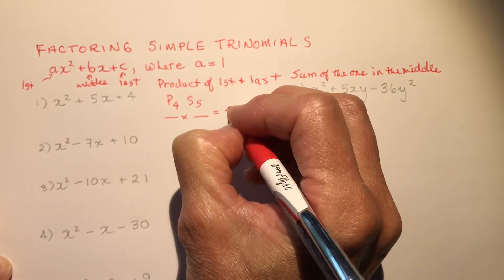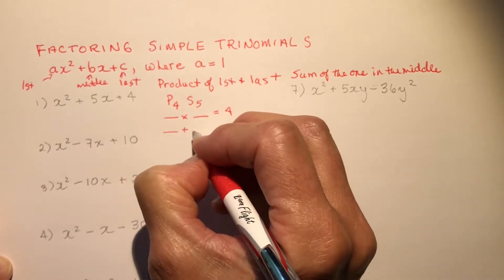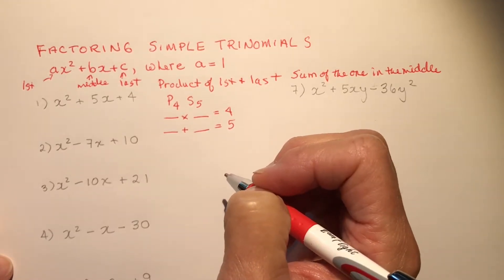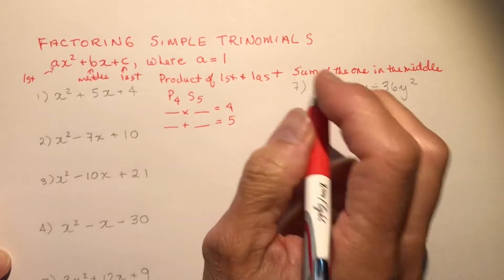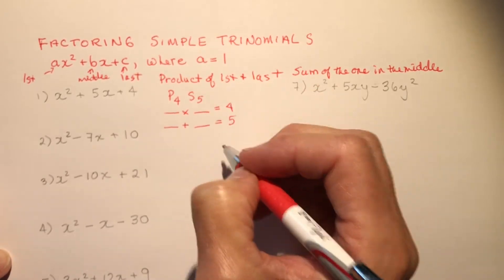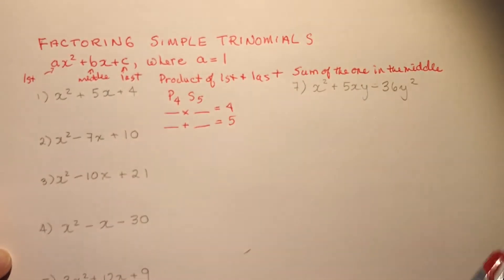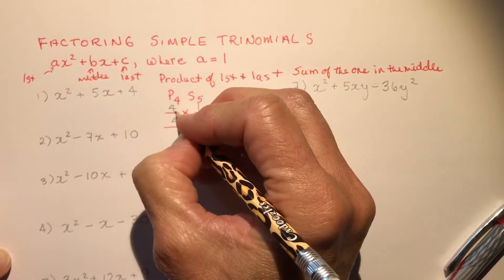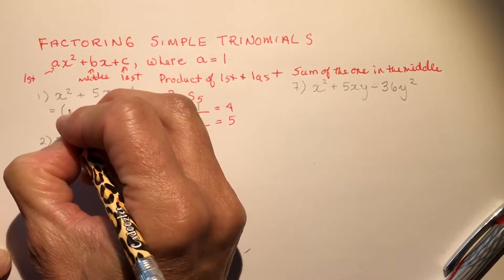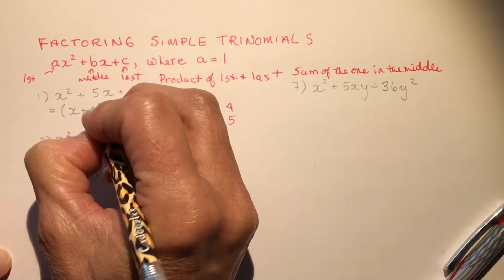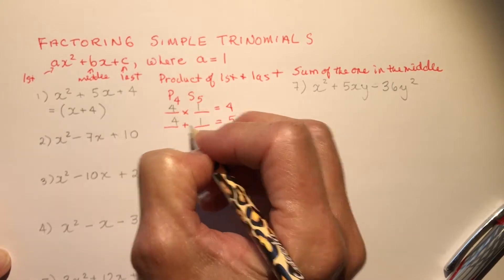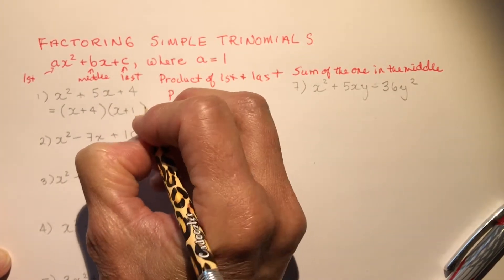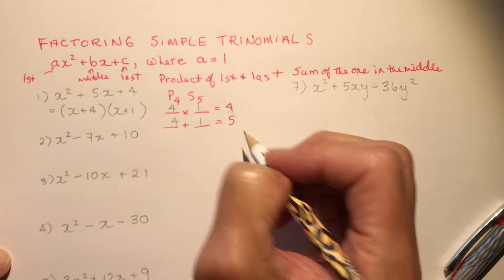So for this first example, I'm looking for two numbers that multiply to 4 and add to 5. You need to know your times tables — if you don't know them by grade 11 it will cost you a lot of time. So: multiplies to 4, adds to 5. That's pretty easy — 4 times 1 is 4, and 4 plus 1 is 5. Now that I know these two special numbers, I make an equal sign and put an x in front of each.